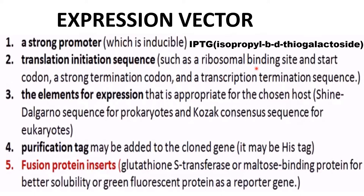Other required elements include a translation initiation sequence such as a ribosomal binding site and start codon, a strong termination codon, and a transcription termination sequence. The expression element appropriate for the chosen host is the Shine-Dalgarno sequence for prokaryotes and the Kozak consensus sequence for eukaryotes.